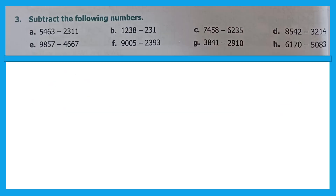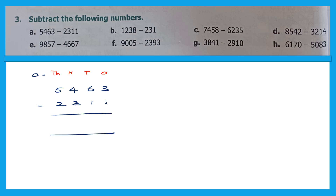Next is subtraction — subtract the following numbers from A to H. Let's begin with question A. Write ones, tens, hundreds, thousands. The question is 5,463 minus 2,311. 3 minus 1 is 2. 6 minus 1 is 5. 4 minus 3 is 1. And 5 minus 2 is 3. The answer is 3,152.